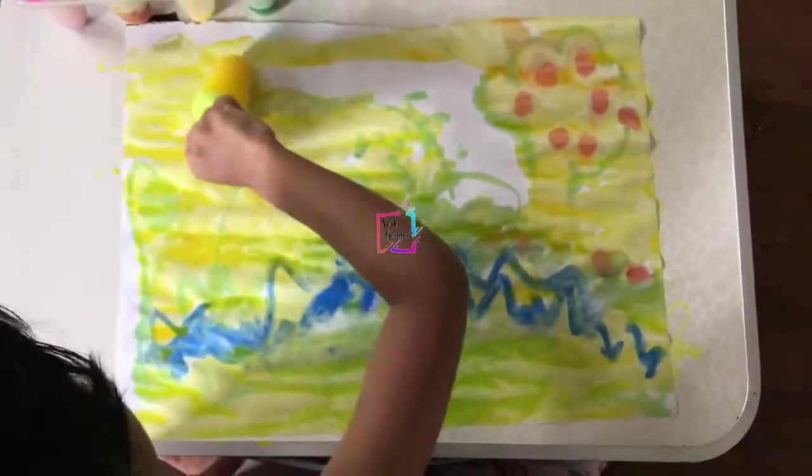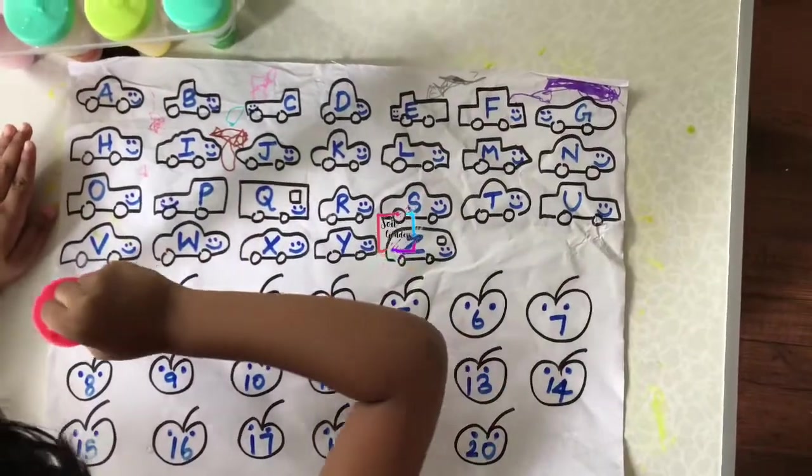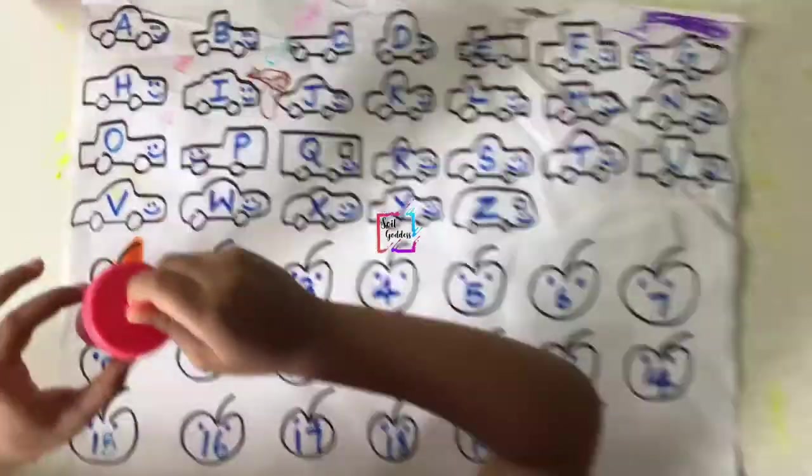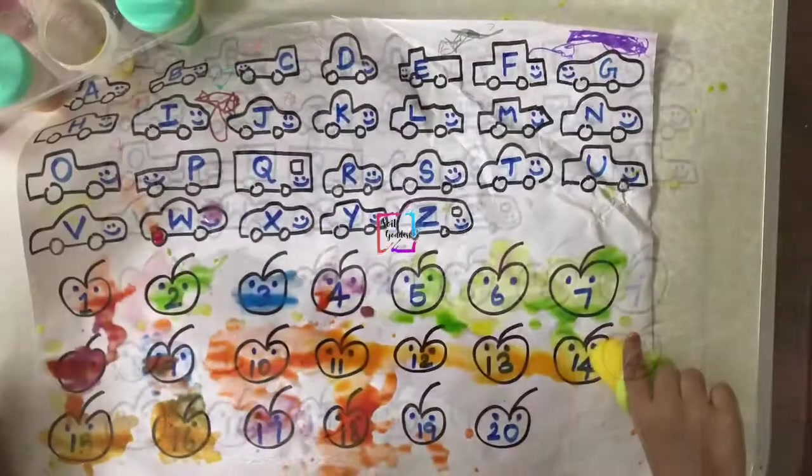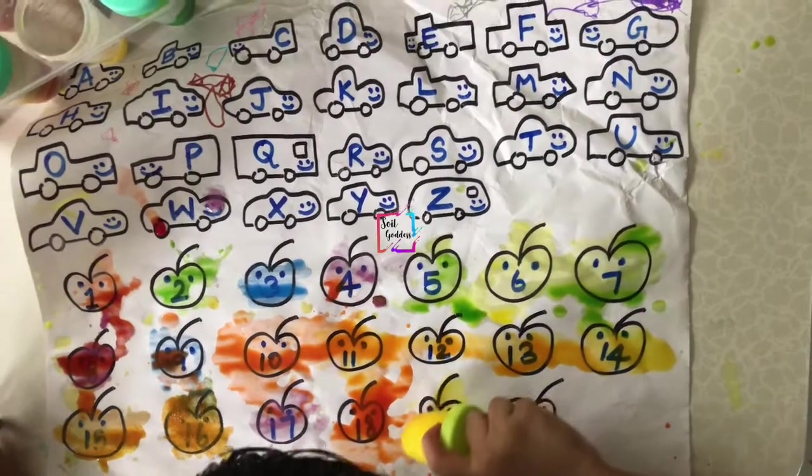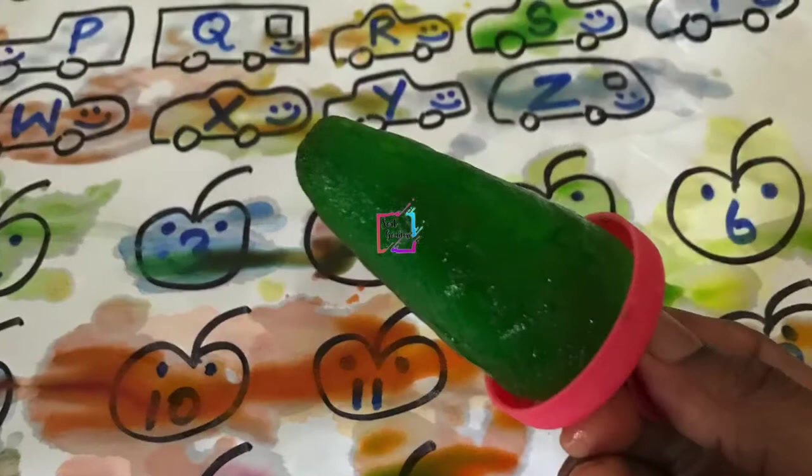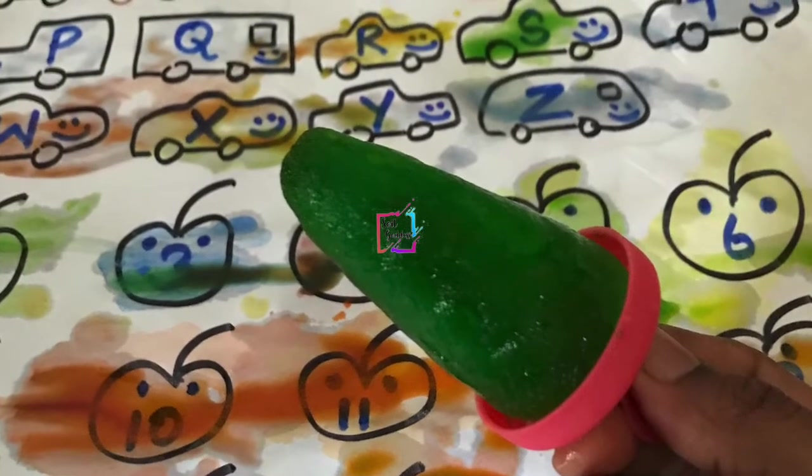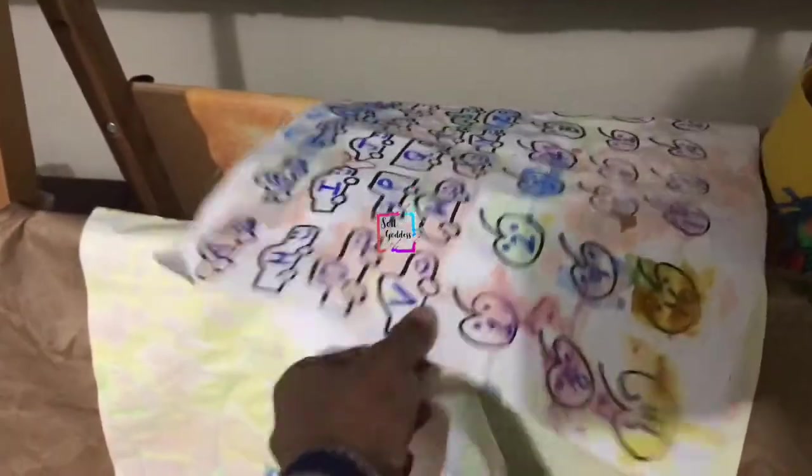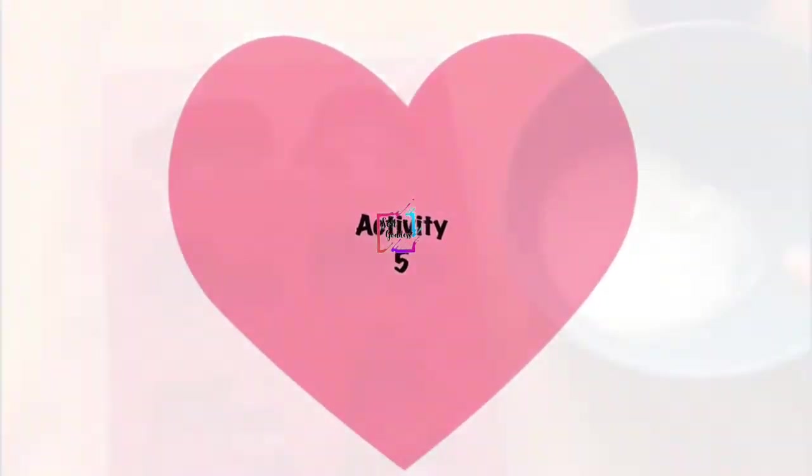My little one is having a great time, and we are also using our old worksheets to paint. I have already shared this in my video months before, like how to teach ABCD and 123, alphabets and numbers in a fun way. I will also leave the link of the activity in the description box. You can go and check it out as well. Now we are moving to the fifth activity.